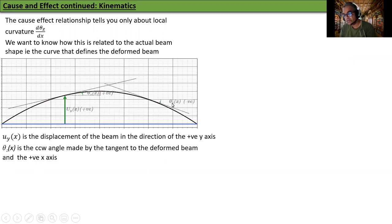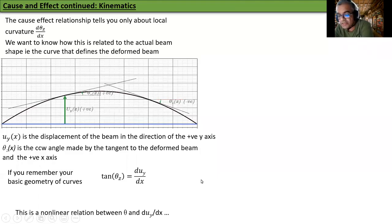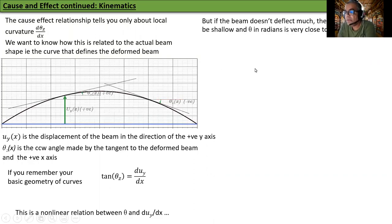And if it slopes downwards, theta z is negative. If you remember your basic geometry of curves, tan theta z equal to dUY/dx. But this is a non-linear relationship between theta and dUY/dx. However, if the beam doesn't deflect much, the slope will be very shallow and theta in radians will be very close to tan theta.